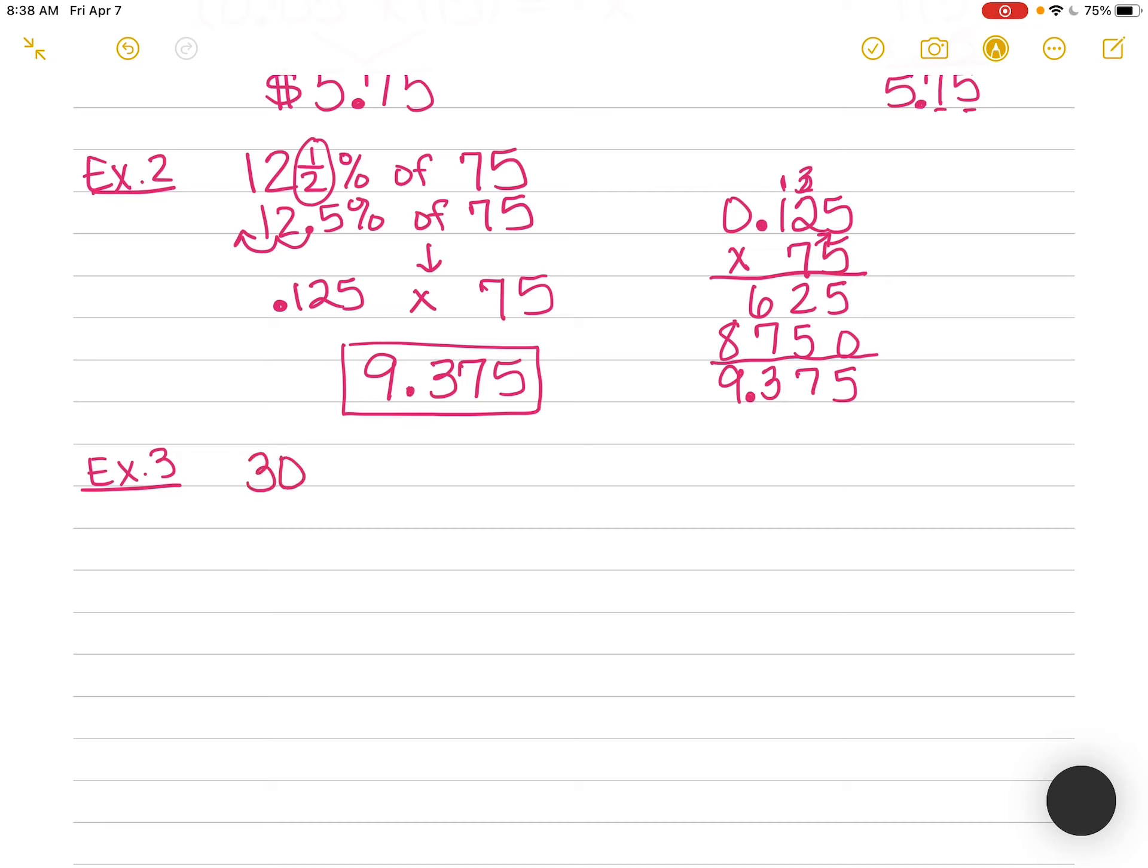So if I have 30% of 150, I can also write this as a proportion. If I have 30%, I can write that as 30 out of 100. And it's going to equal what proportion out of 150, or what number out of 150.